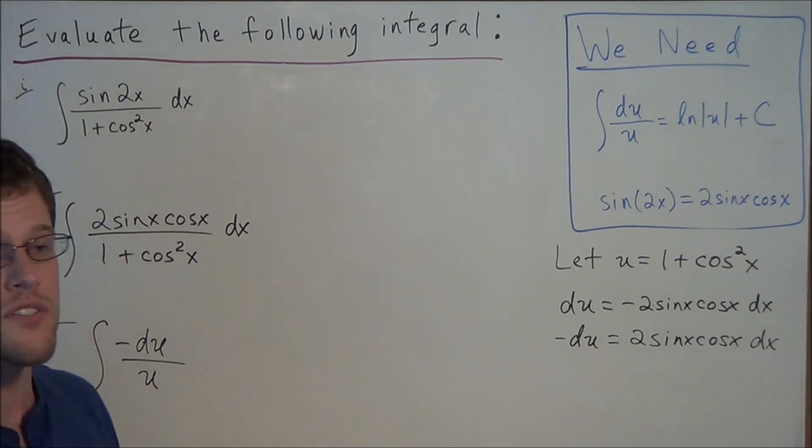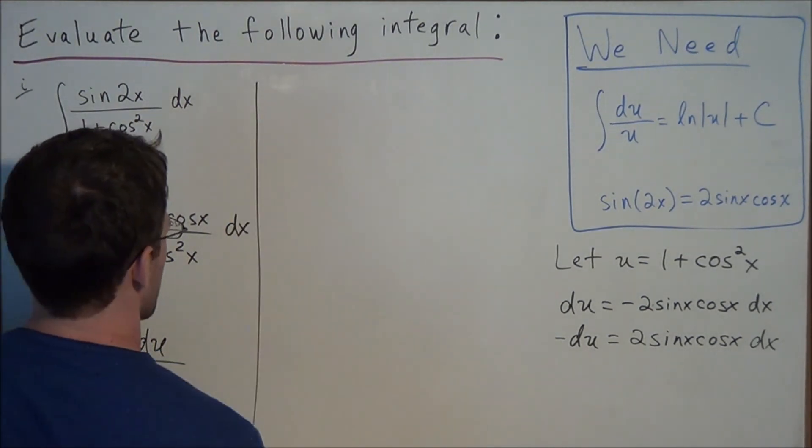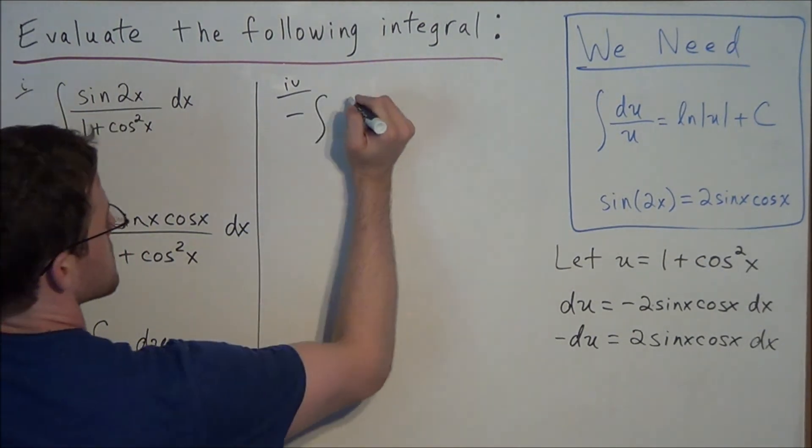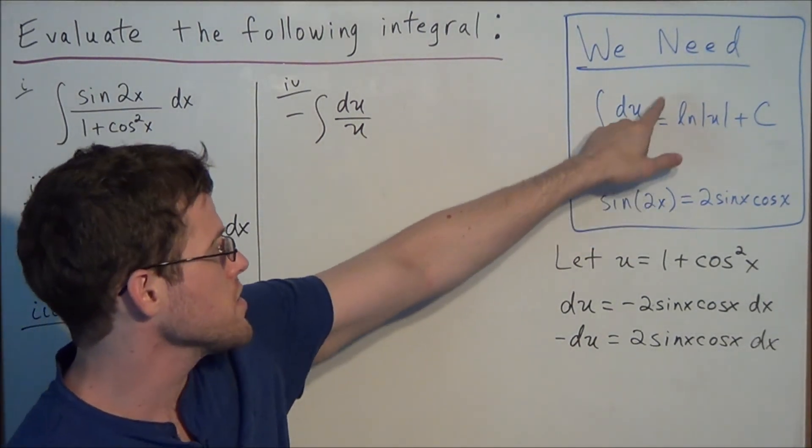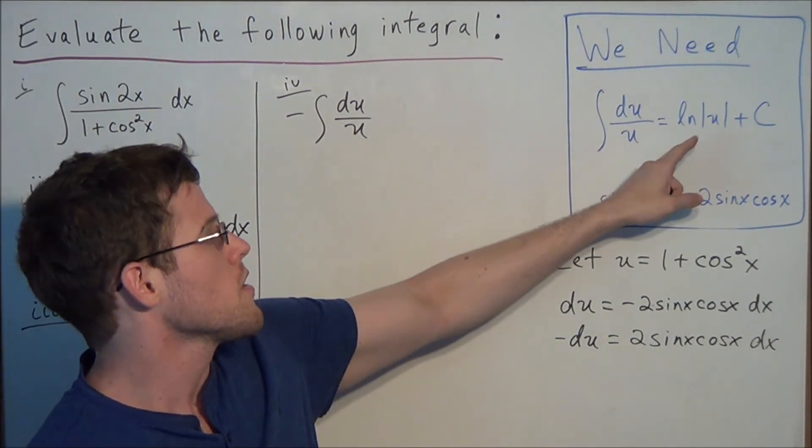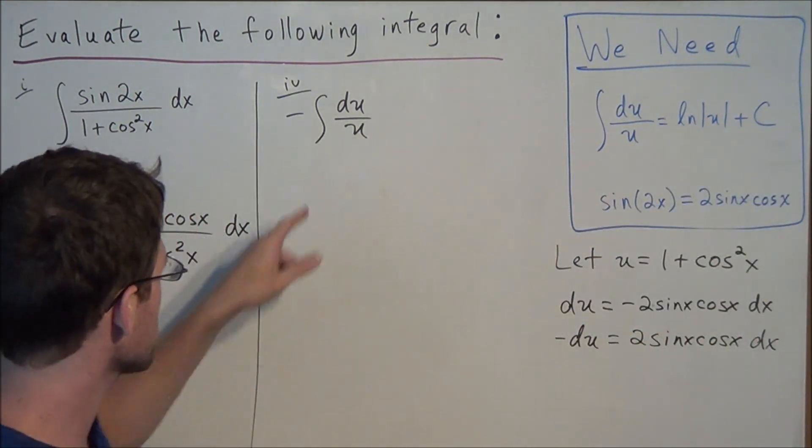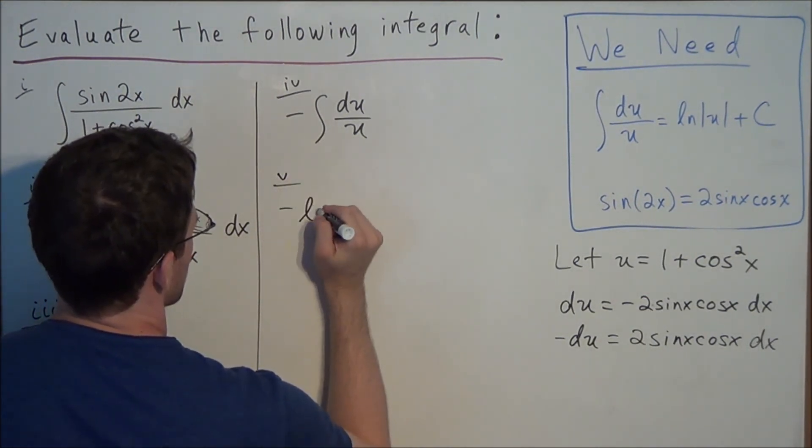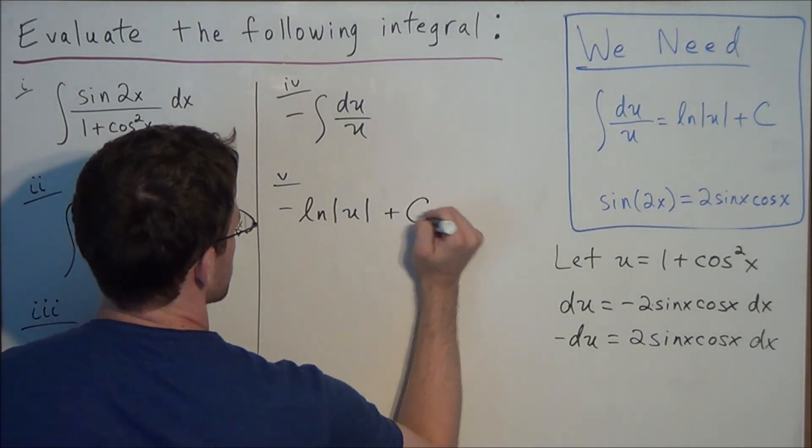So notice the negative in front of our du, we could bring this negative sign outside of the integral in front as a coefficient. So for step 4, we have negative du over u. But notice from what we wrote down in the beginning, that du over u is equal to the natural log of absolute value of u plus c. So at this step, we could write negative the natural log absolute value of u plus our constant term c.